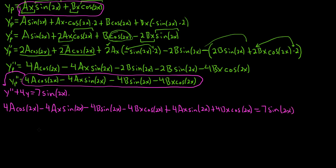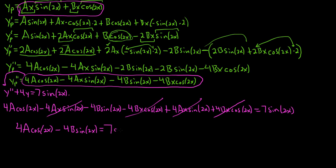Does anything simplify here? The negative 4AX sine 2X and plus 4AX sine 2X cancel. The negative 4BX cosine 2X and plus 4BX cosine 2X cancel. So we're left with 4A cosine 2X minus 4B sine 2X equals 7 sine 2X. Who would have thought it would clean up so nicely?